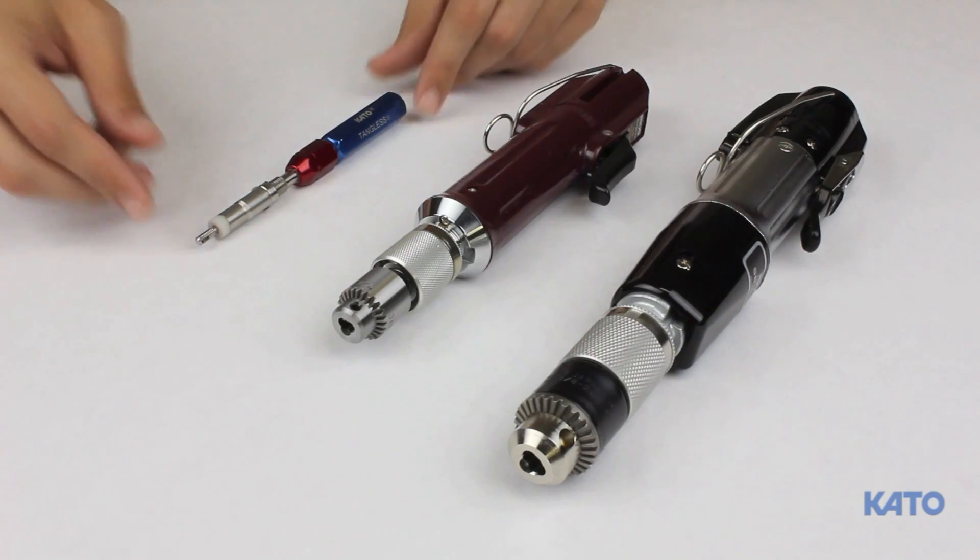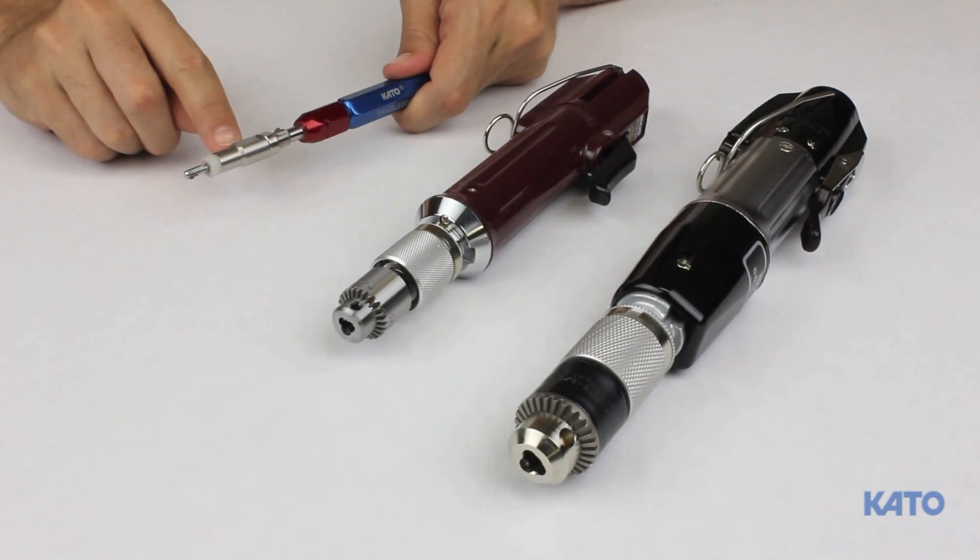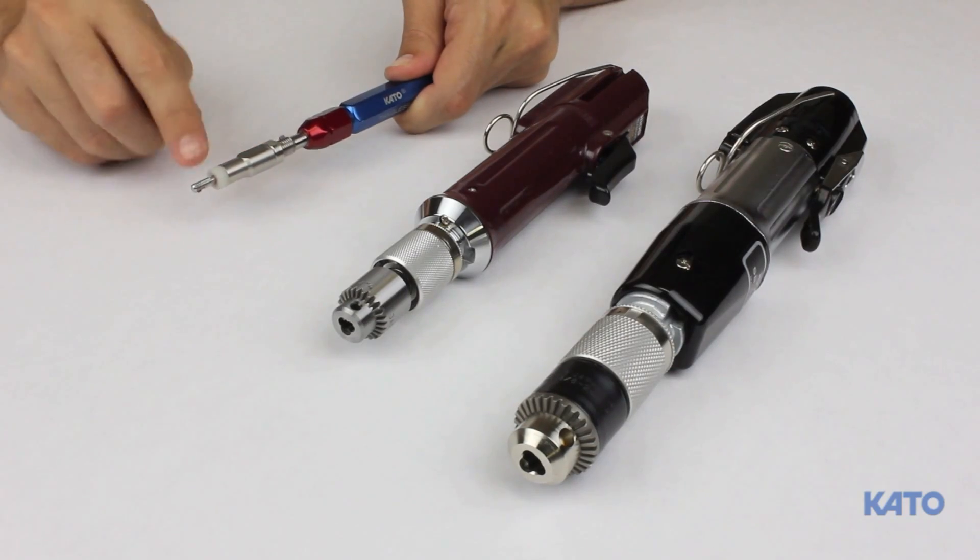This is the Tangless Removal Tool. This is the handle, the adjusting sleeve, the lock nut, and the mandrel.